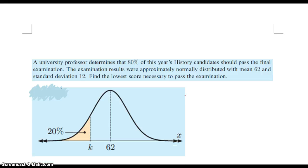For example, a university professor determines that 80% of his year's history candidates should pass the final exam. The exam follows a normally distributed curve. Mean is 62, standard deviation is 12. Find the lowest score necessary to pass the exam.